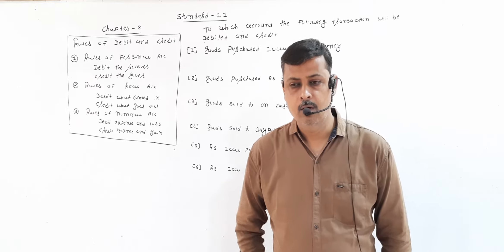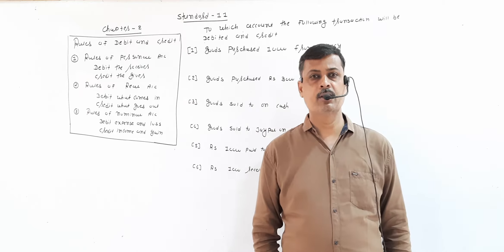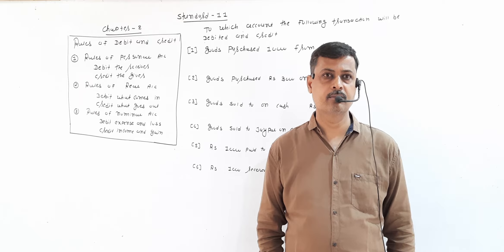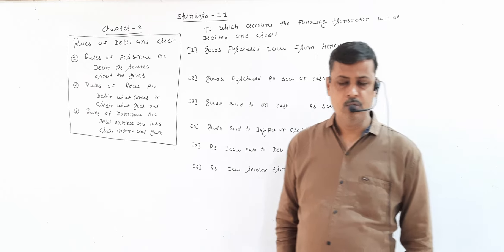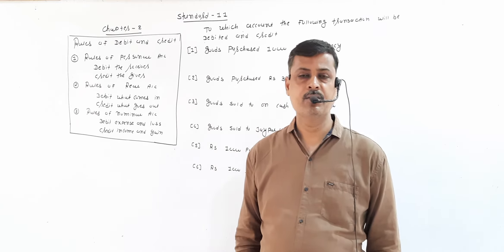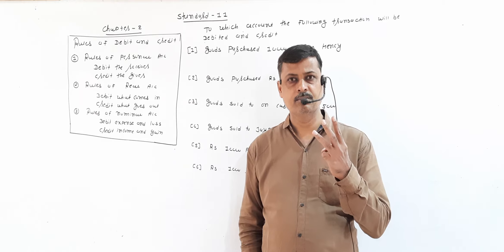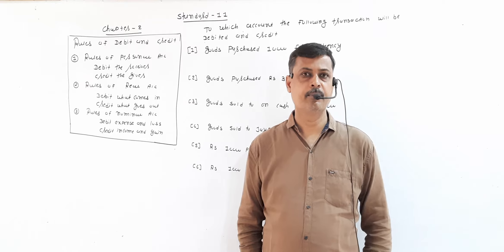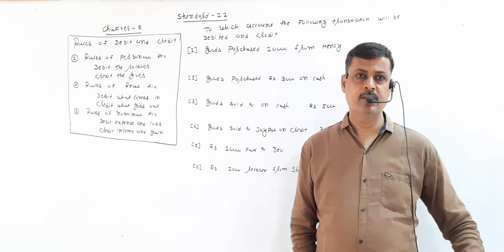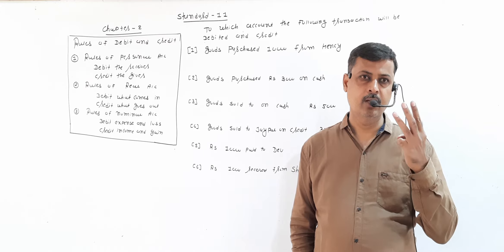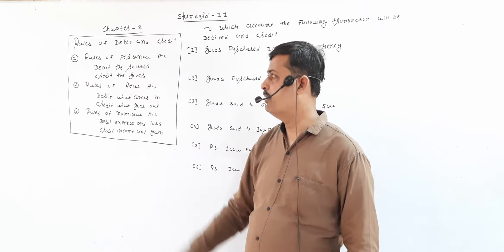Hello friends. Today we are going to discuss about the dual effect of transactions. In accountancy there are three important rules for debit and credit, because the double entry system is dependent on these three rules. These are the rules of debit and credit.